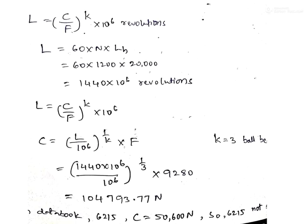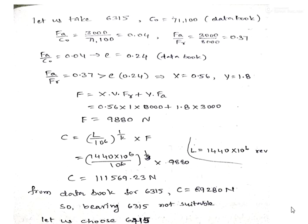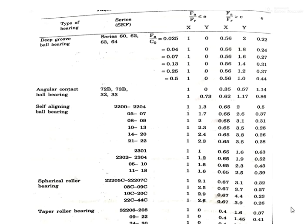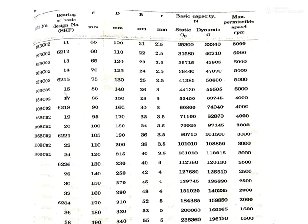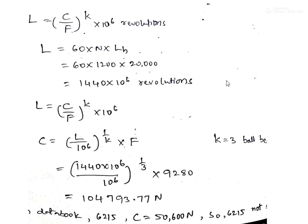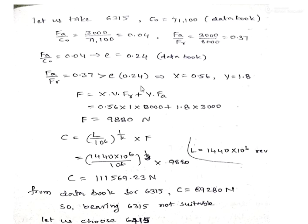However, from the data book for the 6215 series, the dynamic capacity is 50,600 N. Since our calculated required C (14,793 N) is much less than the catalog value, one might think it is suitable, but the 6215 series is not appropriate here. Let us go for the next series, that is the 6315 series.